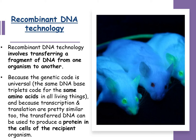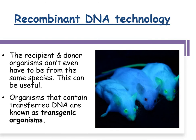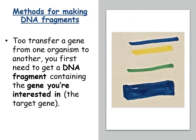Because the genetic code is universal — the same DNA-based triplets code for the same amino acids in all living things — and because transcription and translation are quite similar in all organisms, the transferred DNA can be used to produce a protein in the cells of the recipient organism. The recipient and donor organisms don't actually have to be the same species, and organisms that contain transferred DNA are known as transgenic organisms.